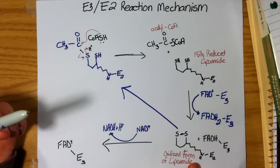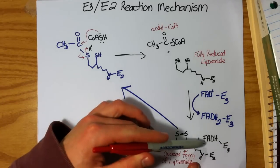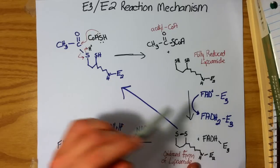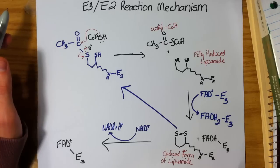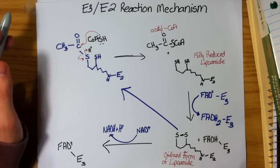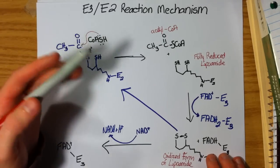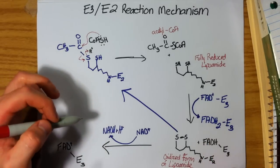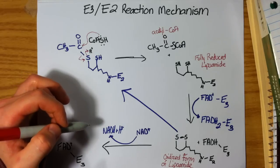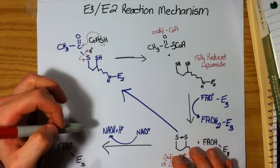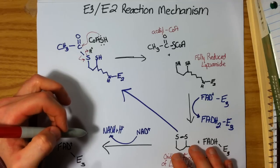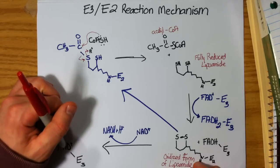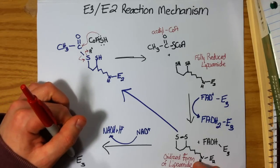And lastly, FADH bound to E3 transfers its electrons onto NADH. Because FADH is bound permanently to this enzyme complex, it cannot deposit the electrons anywhere, but a free-floating NADH can pick up these electrons through a redox reaction and use it elsewhere for synthesis of other molecules, or could contribute it towards the electrochemical gradient needed in the electron transport chain and oxidative phosphorylation. But now we have regenerated our FAD+ bound to E3.